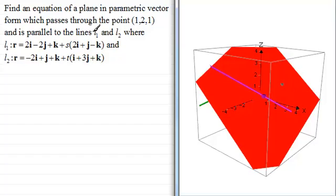And it's parallel to the lines L1 and L2, L1 being this line, and L2 the one behind the plane. L1 is given by the position vector r = 2i - 2j + k + s(2i + j - k).